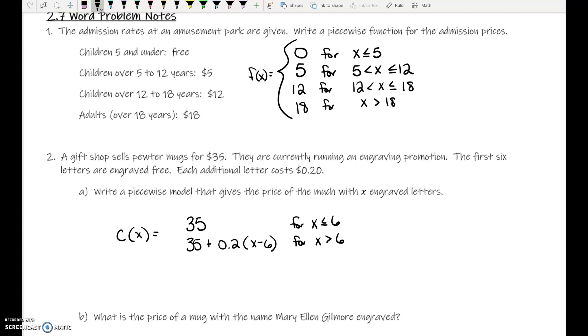And this is for x is greater than six. So if x is 7, 7 minus 6 is 1, that's one additional letter. If there are 10 letters, that's four letters beyond six. So 10 minus 6 is 4, 20 cents times 4 plus the $35. I will probably not make you write that complex of a piecewise function on your own. I would just give that to you.